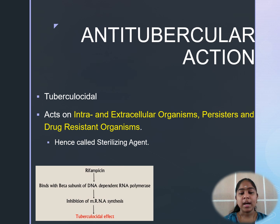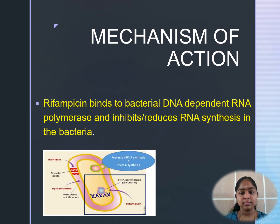Regarding its mechanism of action as an anti-tubercular drug: Rifampicin binds to the beta subunit of the bacterial DNA-dependent RNA polymerase, causing inhibition of mRNA synthesis and producing a tuberculocidal action. It does not bind to the human DNA-dependent RNA polymerase, thereby reducing RNA synthesis selectively in bacteria.